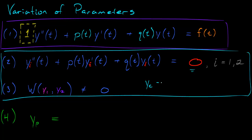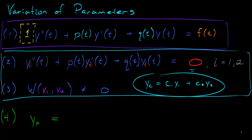This is equivalent to finding the complementary solution: yc equals c1 y1 plus c2 y2. Variation of parameters doesn't tell us anything about finding this solution, but if we happen to have it — which in the case that the coefficients are constant, we have methods for — then we can construct a particular solution to the non-homogeneous part.